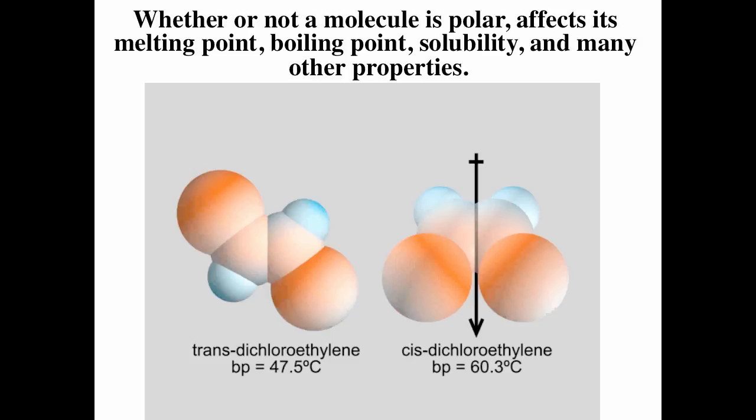Since greater polarity leads to stronger attractions among molecules, the cis-compound boils over 18 degrees higher than the trans-compound. Whether or not a molecule is polar or nonpolar affects its physical properties like boiling point, melting point, solubility, and viscosity.